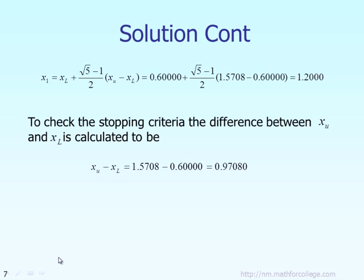After you get the new interval, you can calculate two interior points, x1 and x2. However, among those two interior points, for this case, you only need to calculate the new interior point x1. That x1 can be calculated based on the formula developed in the previous lecture. Plugging in the numerical values: the new lower bound is 0.6, the new upper bound is still 1.5708, and therefore the new interior point x1 equals 1.2.